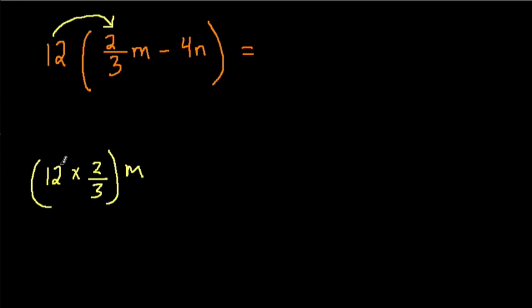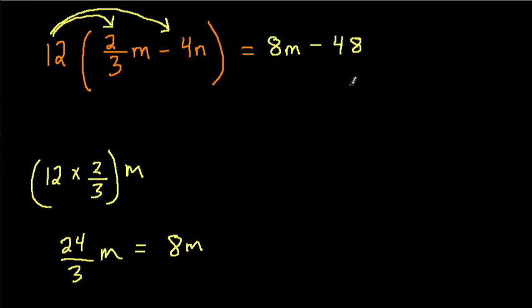To multiply 12 by 2/3, multiply 12 by 2 to get 24 - it's still over 3 - and we still have the m here. 24 over 3 is just 24 divided by 3, or 8, so 8m. Our first term will be 8m. Now we subtract our next product: 12 times 4n is 48, and we get 48n. Here we're done because we can't simplify anymore.